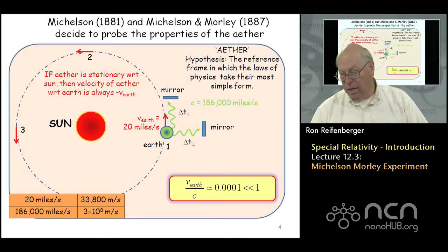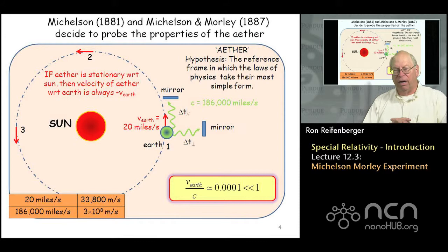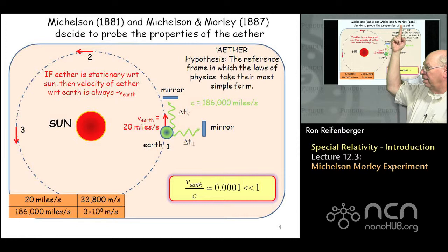There were two sets of experiments done. The first was done by Michelson in 1881. He then revised the experimental apparatus and performed a much more accurate measurement, and Morley joined him as a collaborator — so it's known as the Michelson-Morley experiment, done in 1887.